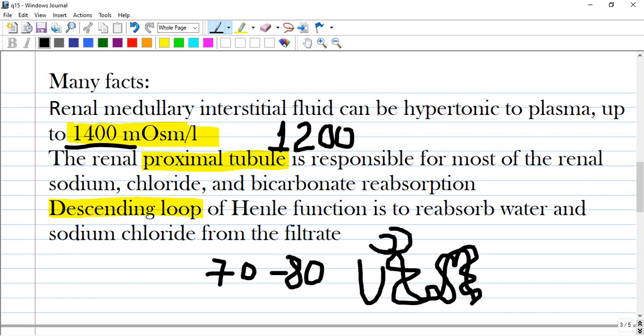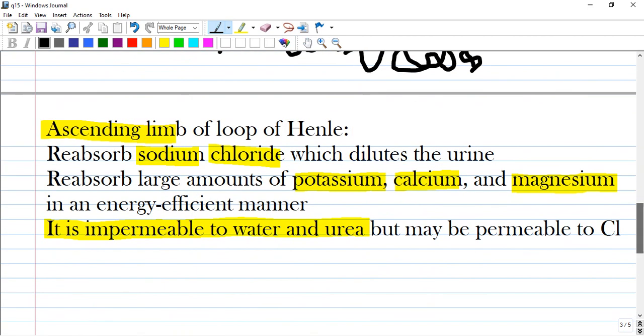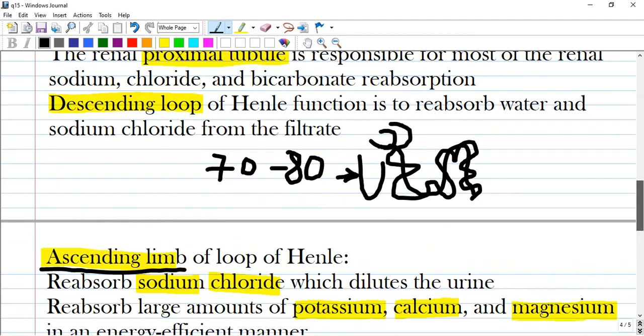In contrast, the ascending limb of loop of Henle reabsorbs sodium chloride which dilutes the urine.